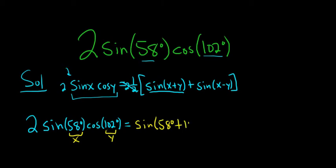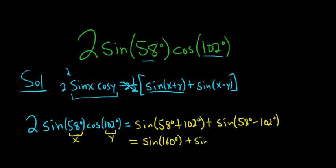102 degrees plus sine of 58 degrees minus 102 degrees. This is sine of 160 degrees plus sine of, now 58 minus 102 is negative 44.